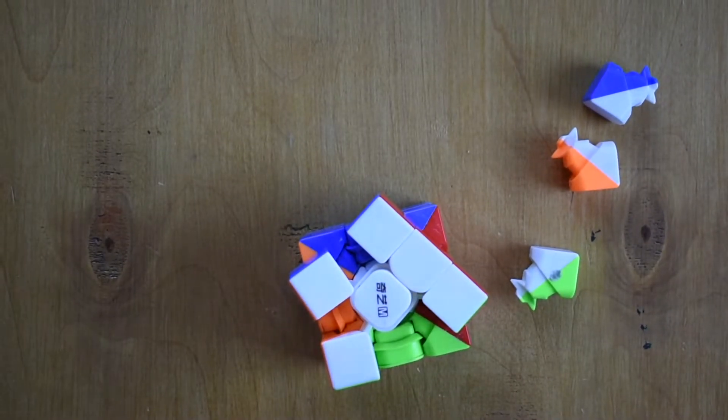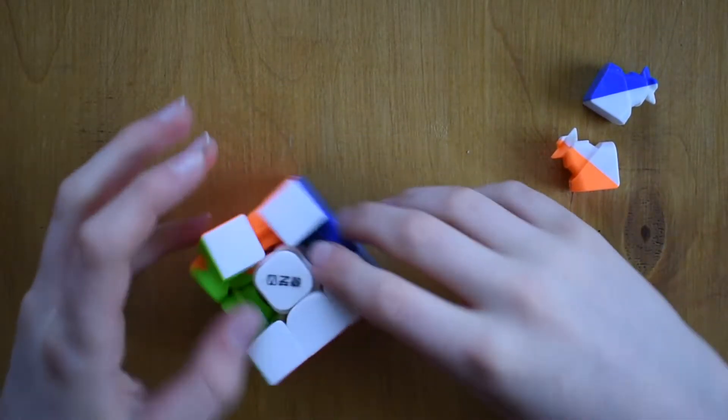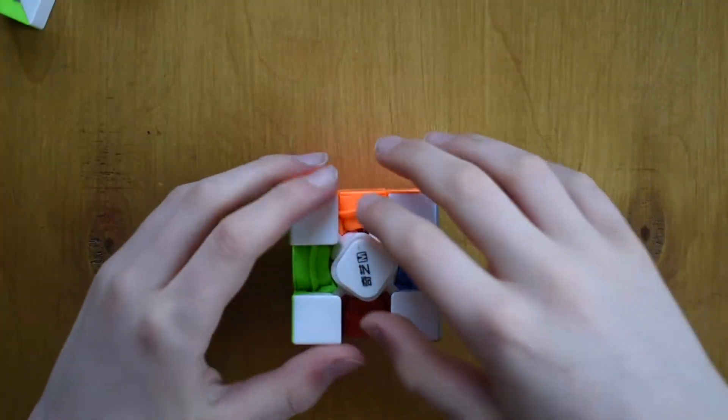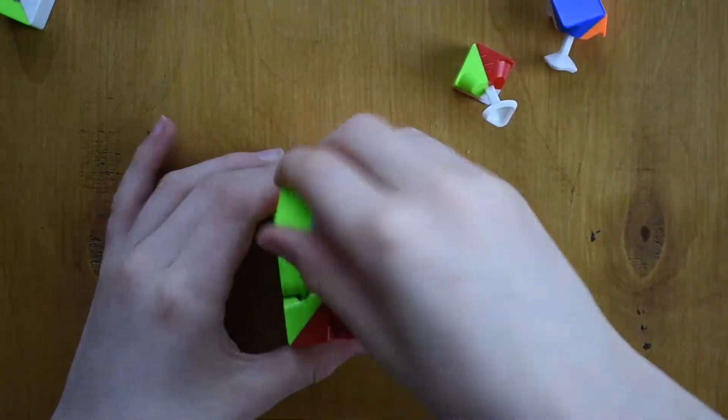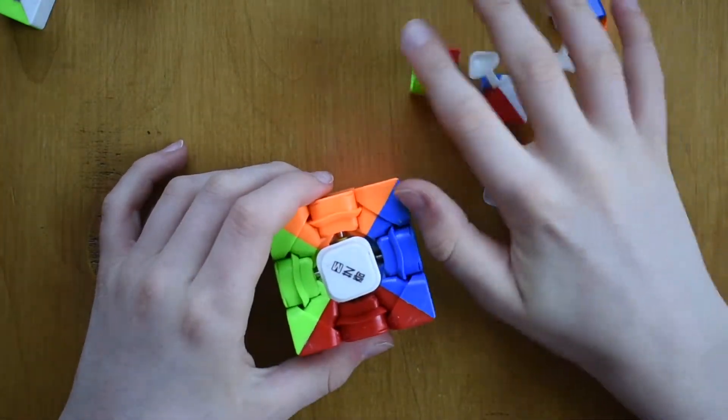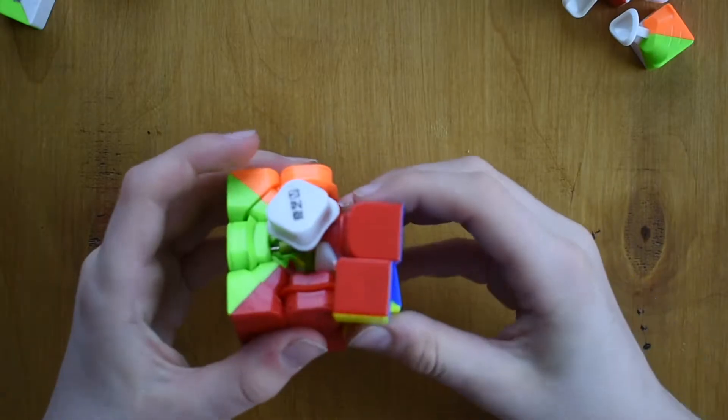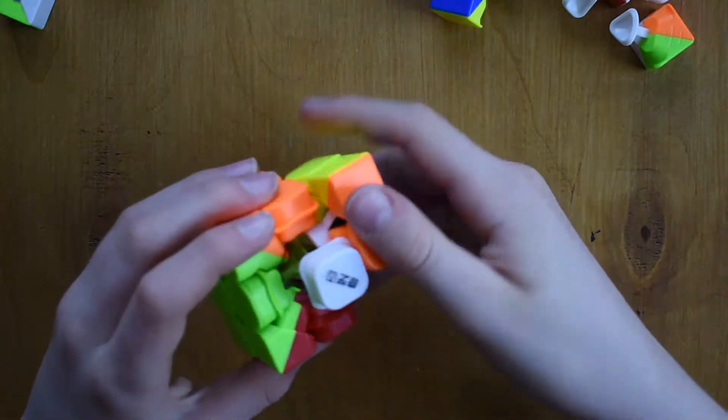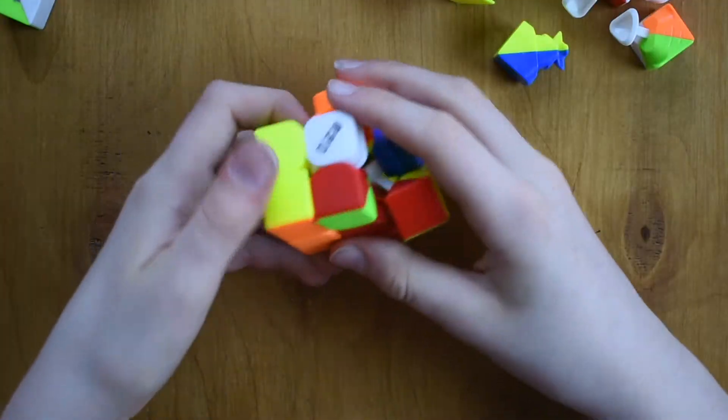You want to take out all these edges, put them over there, and then your corners from the first layer should be simple, and then you can easily take out the rest.